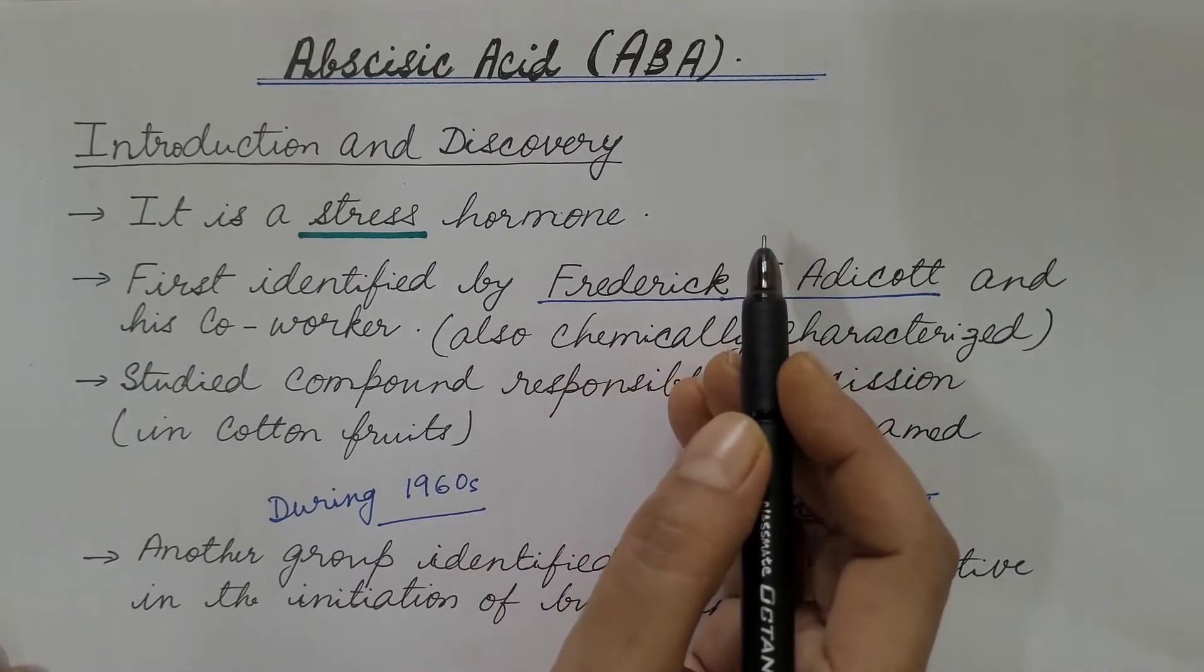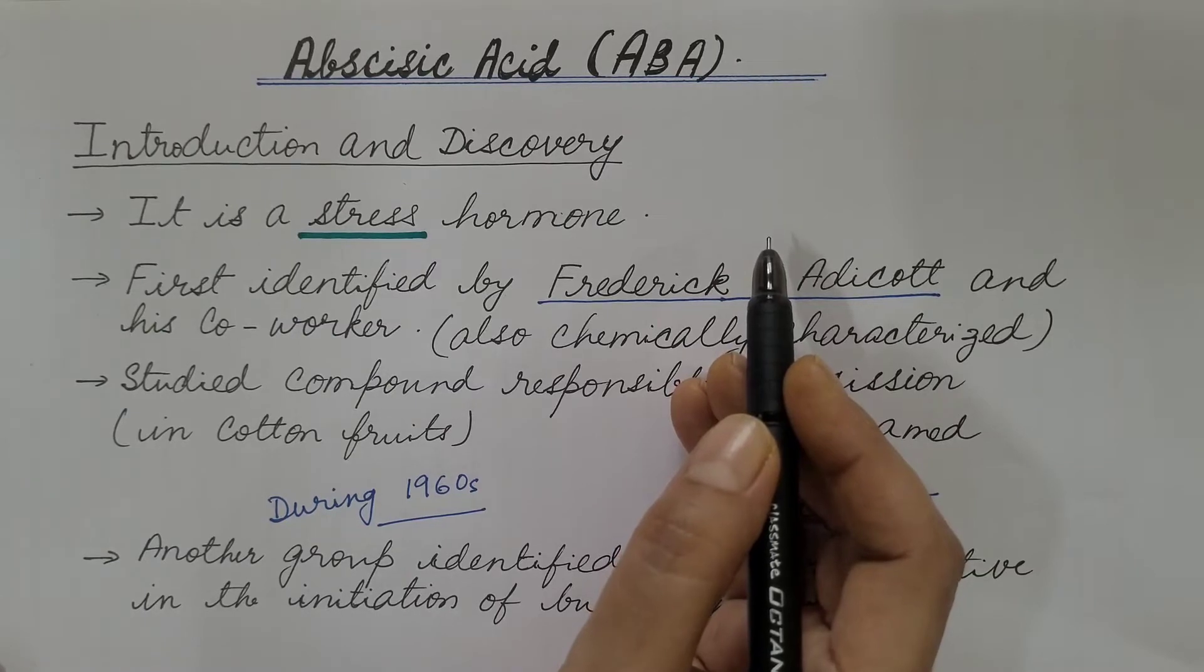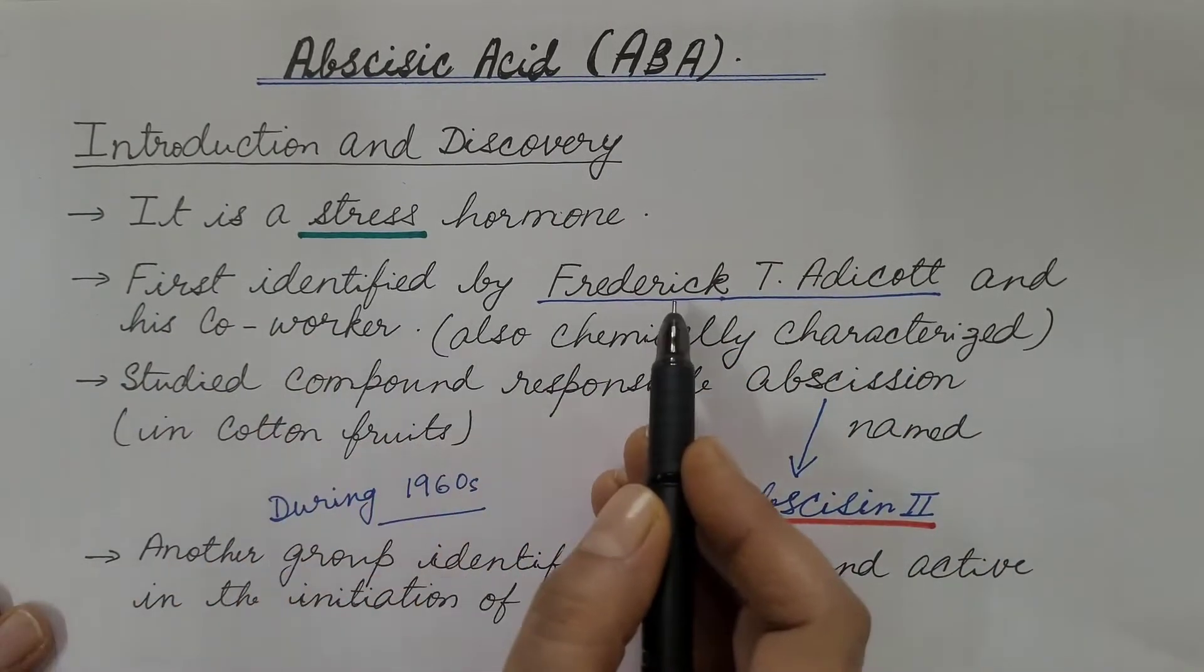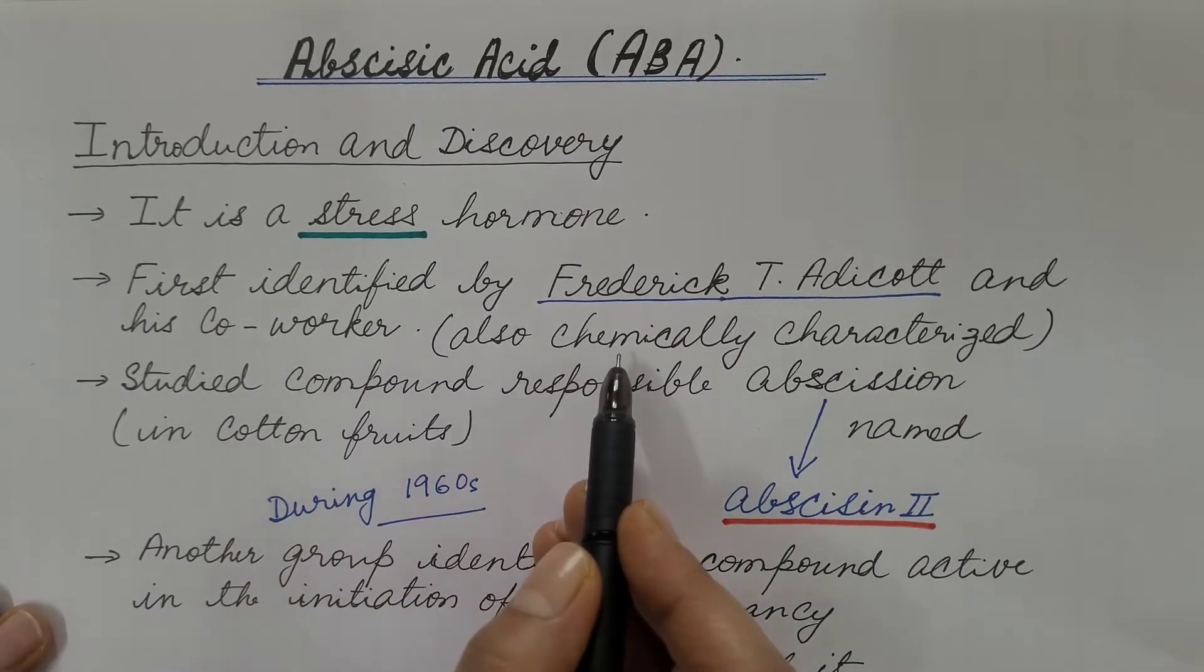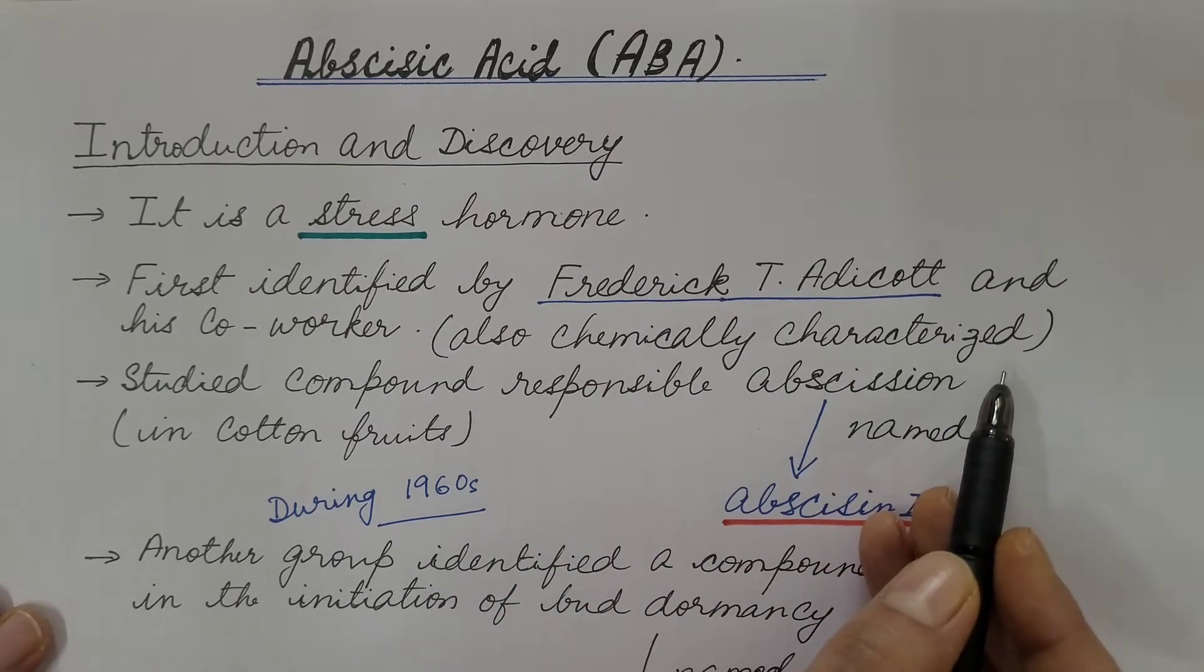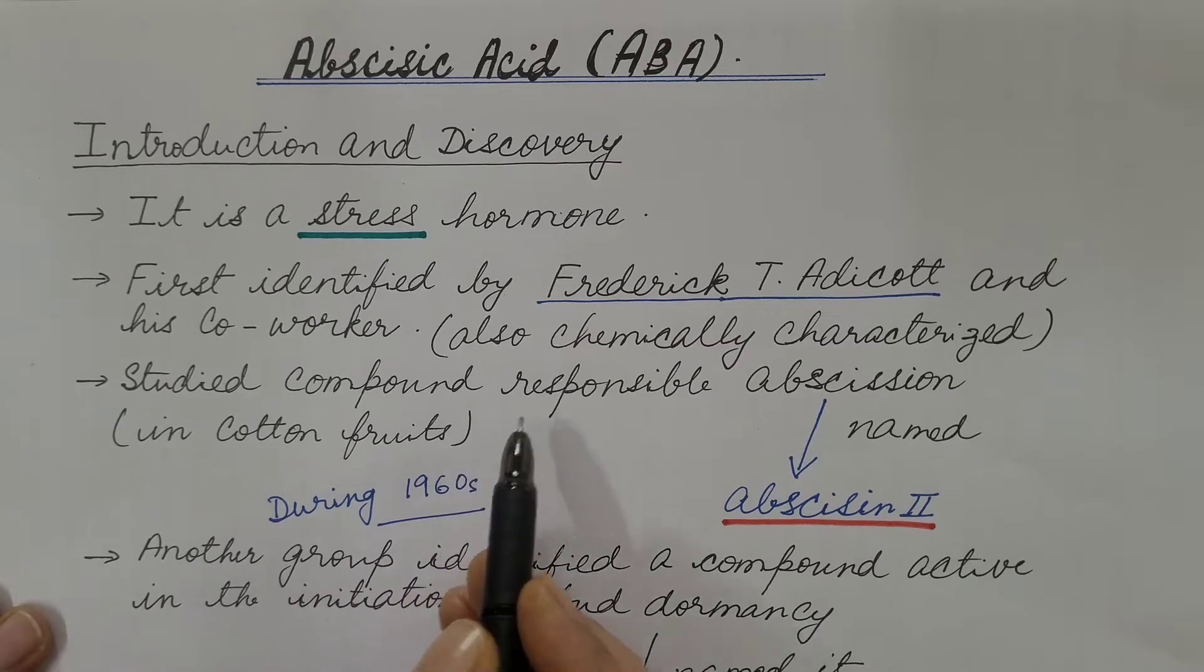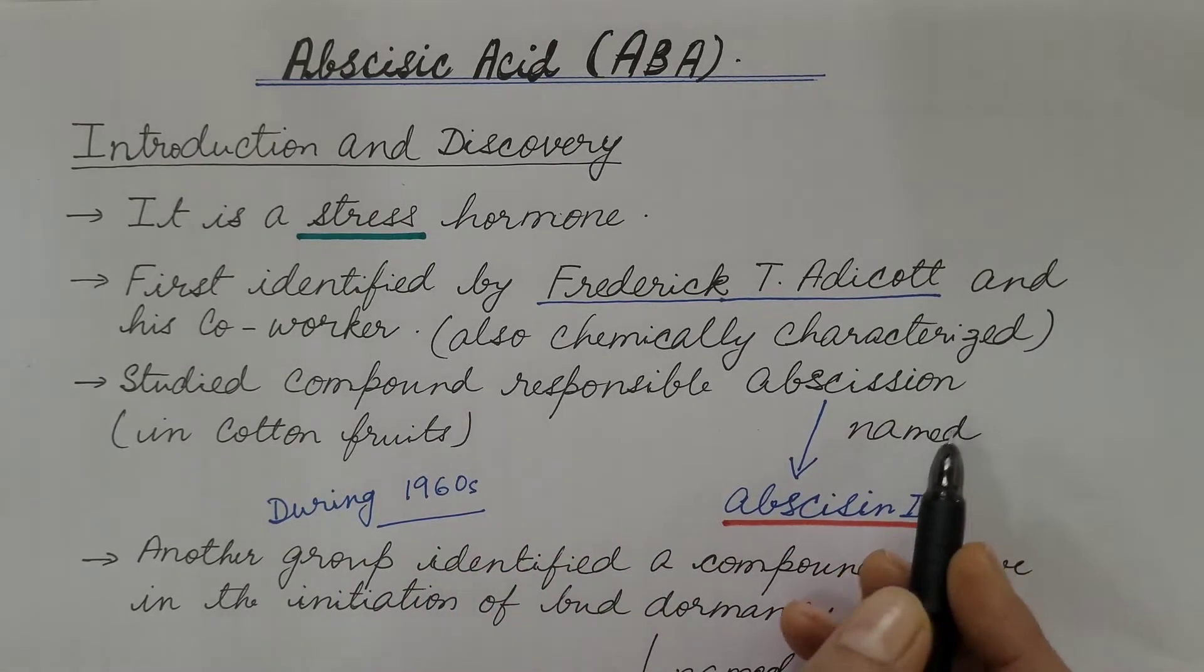It was first identified by Frederick T. Adicott and his co-worker. They also chemically characterized it. They studied a compound in cotton fruits that was responsible for abscission and named it abscissin II.